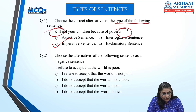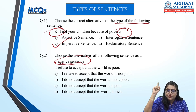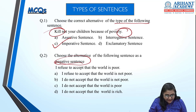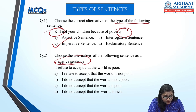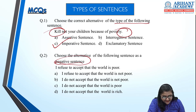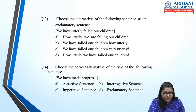Next: choose the alternative as a negative sentence. A negative sentence contains negative words: no, not, never, neither, nothing, nor. The sentence is 'I refuse to accept that the world is poor.' When adding a negative word, the meaning should not change. 'I refuse to accept that the world is not poor' — that changes the meaning. The correct answer is 'I do not accept that the world is poor.' Whenever changing from positive to negative, the meaning must not change.